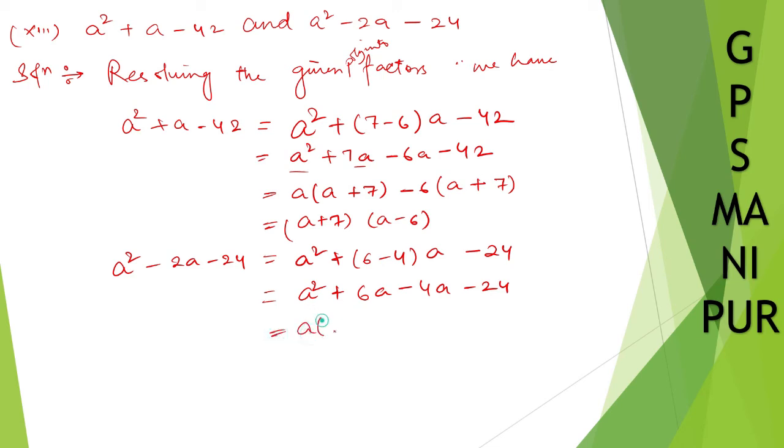Now from these two you can take a common: a plus 6. And from these two you can take 4 common, so it will be a plus 6. Now a plus 6 you can take out common, so a plus 6 and a minus 4.